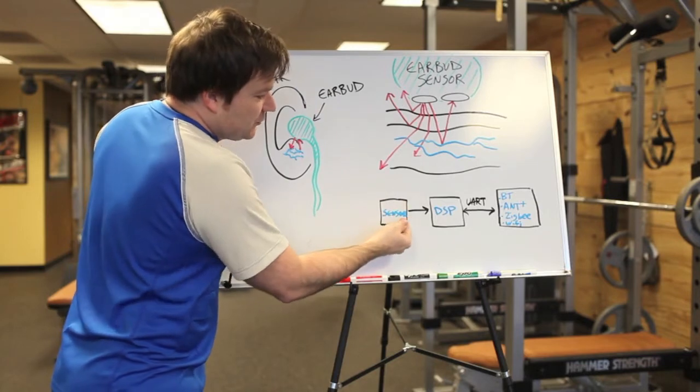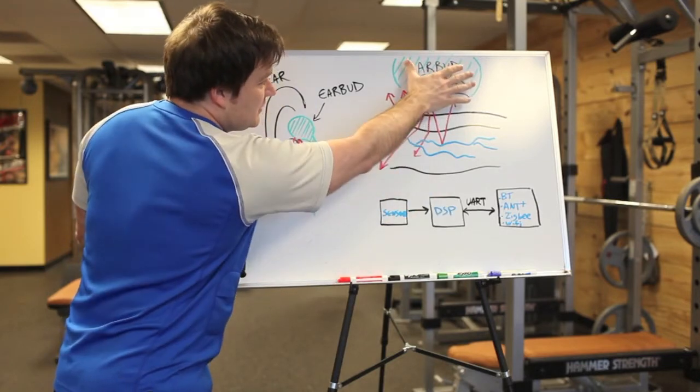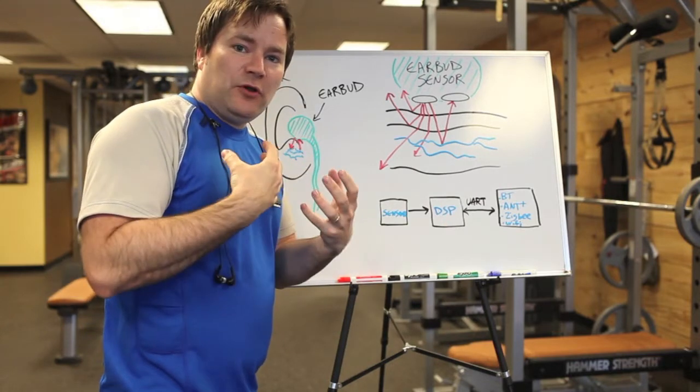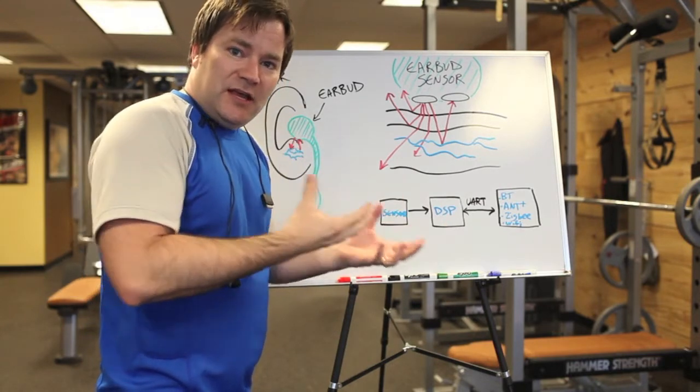And the way we do it is our sensor communicates with a DSP. So, this earbud sensor communicates directly with a DSP that characterizes the blood flow with respect to noise and pulls out the blood flow and eliminates or strongly attenuates the noise.